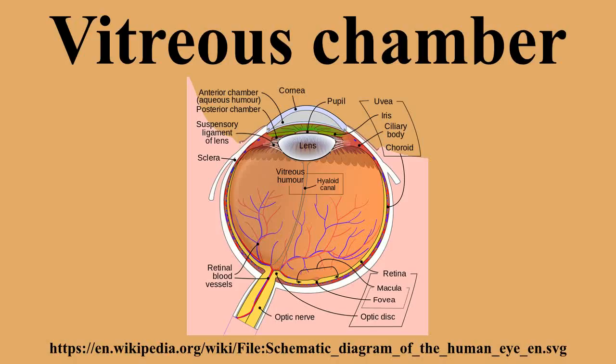The vitreous humor plays a crucial role in supporting the posterior side of the lens. Along with supporting the lens, it also functions in maintaining the shape of the entire vitreous chamber and posterior cavity. It is imperative that the eye remains the proper shape to ensure that the light passing through the lens and the fluid can focus properly on the retina. The composition of the fluid is 99% water and contains no cells, so the light can effectively pass through without being deflected. The fluid is often thought to be a sort of liquid lens that further focuses the light that has already passed through the lens on the way towards the retina.